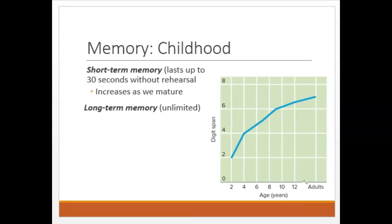Of course, there are individual differences — some people can remember more, some people can remember less. In contrast with short-term memory, long-term memory is relatively unlimited and permanent. As children get older, they move beyond infantile amnesia and start to develop more permanent autobiographical memories — those are just memories about themselves. There has been some discussion, though, about whether young children should be allowed to provide eyewitness testimony at trials, because although their memory is improving, preschoolers are very susceptible to suggestion, making it easy to get a manipulated or distorted testimony out of a very young child.